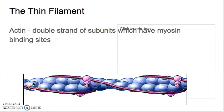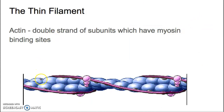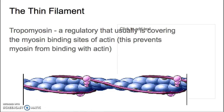Actin is double-stranded, and the subunits have myosin binding sites. However, those myosin binding sites are covered by tropomyosin — long strings that cover those myosin binding sites. Tropomyosin is a regulatory protein; it prevents interaction between actin and myosin unless certain conditions are met.